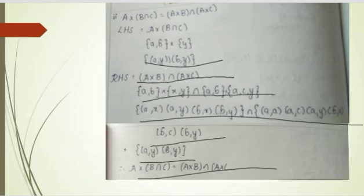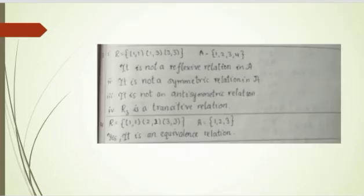The second part is A × (B ∩ C) = (A × B) ∩ (A × C), and the third part follows similarly. For each, solve LHS and RHS separately by substituting the values of A, B, and C and expanding. You will get LHS equals RHS in each case.